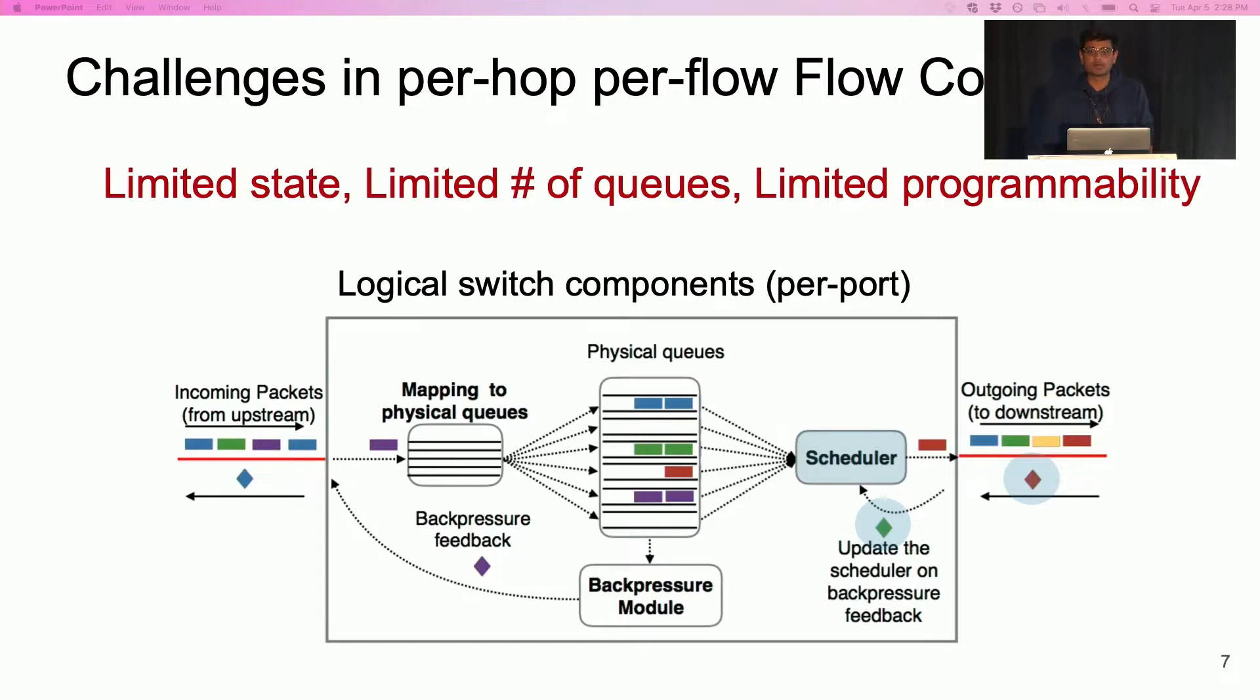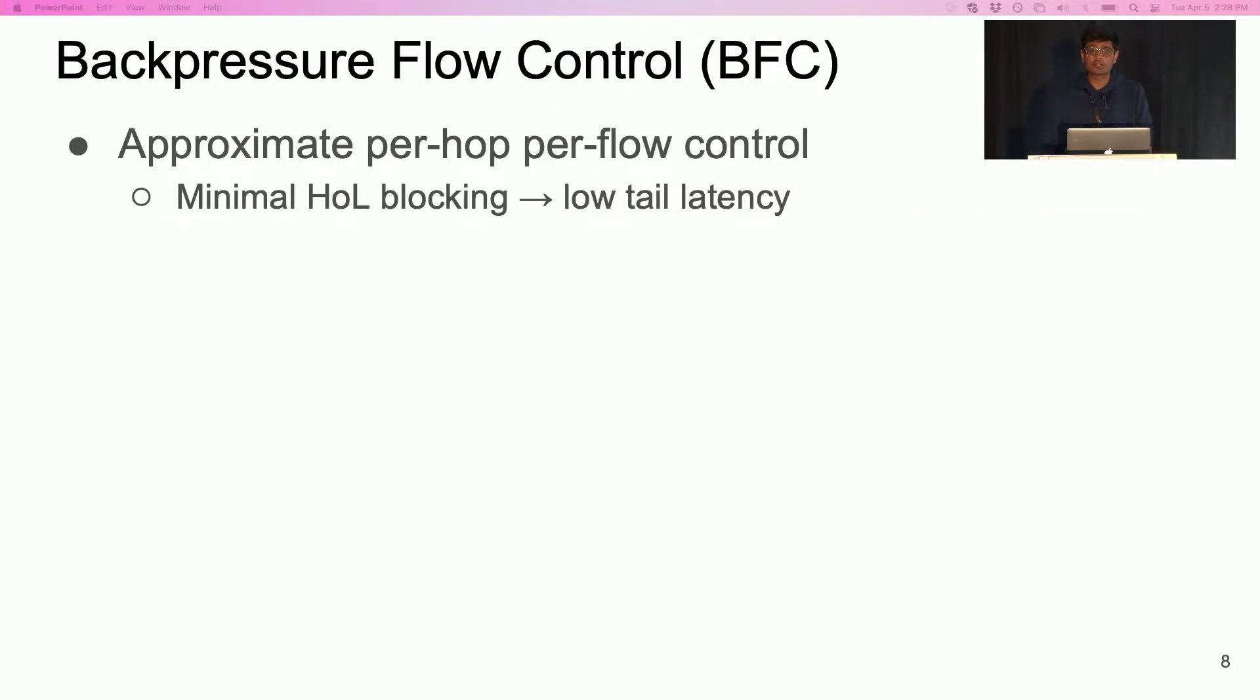Our main contribution in BFC is a practical design that achieves an approximation of per hop per flow control. In BFC, most of the time, flows get their own queues at the switch and there is no head of line blocking. In our experiments, BFC achieves close to optimal tail latency.